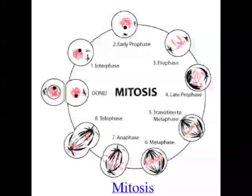Mitosis can be broken down into four different phases: prophase, metaphase, anaphase, and telophase. If you have trouble remembering those four phases, a good mnemonic is 'plant many apple trees' — P for prophase, M for metaphase, A for anaphase, and T for telophase.